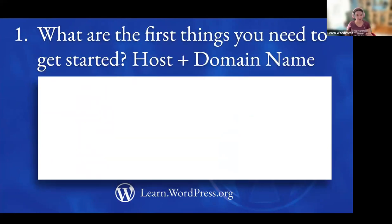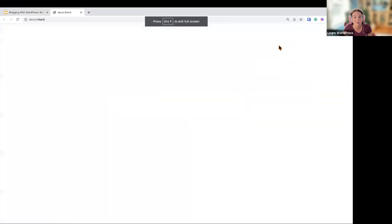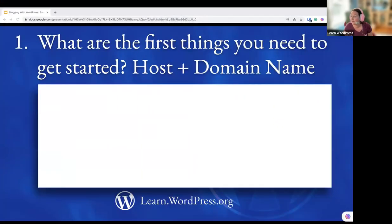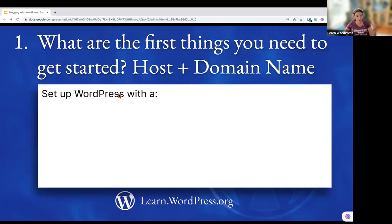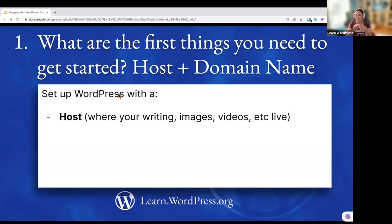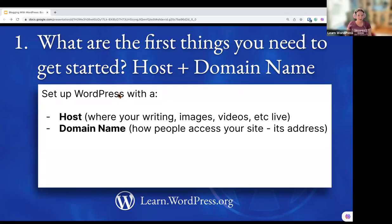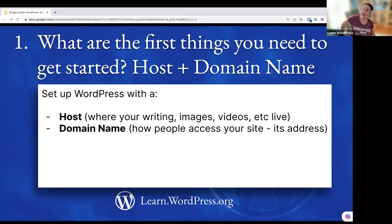The first things you need to get started are a WordPress host and a domain name. A host is where your writing, images, videos, and thoughts all live — basically a database where everything lives together. The second thing is a domain name — how people access your website, its address. Things like learn.wordpress.org is an example of a domain name. I have one blog at birdie.blog — just an example. It's how people access and find your website.